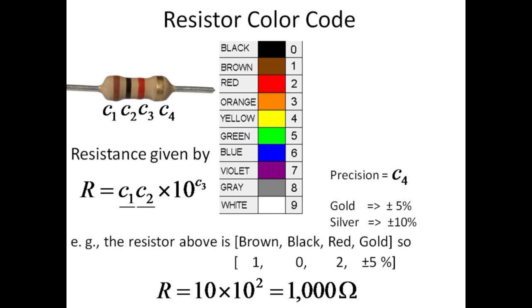The first two colors form a two-digit number which is to be multiplied by 10 raised to the power of the third color. If the isolated color band is gold, the precision is plus or minus 5%. If it is silver, the precision is only plus or minus 10%.